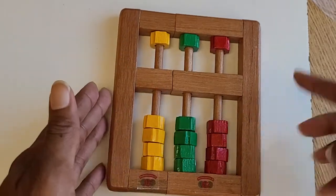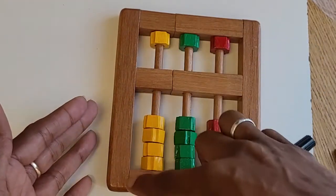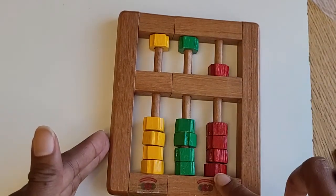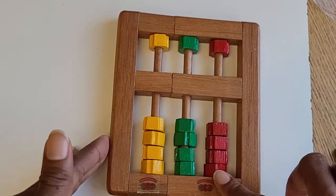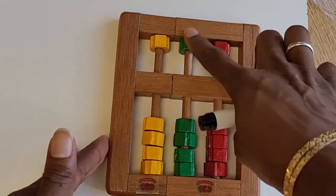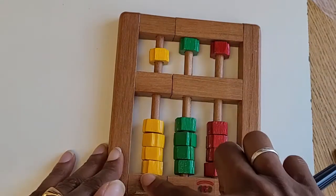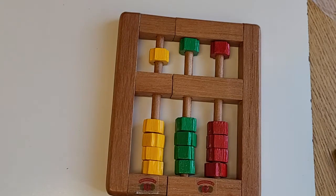The way that the abacus works is that each rod represents a different place value. Your red rod in this instance will represent the ones. The green rod represents the tens, and the yellow rod represents hundreds.